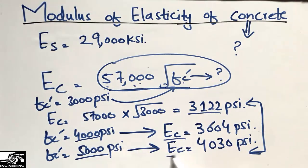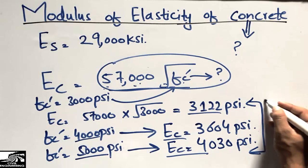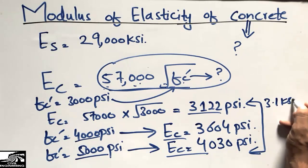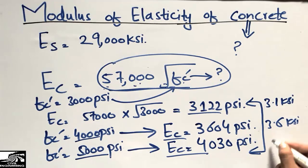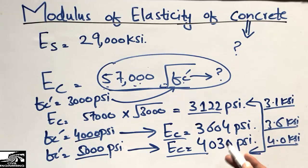It means 3.1 ksi, 3.6 ksi, and 4.0 ksi in kip per square inch units, while these are the values in pound per square inch.